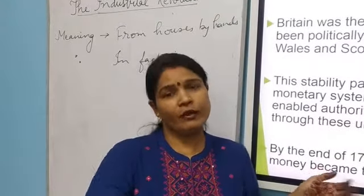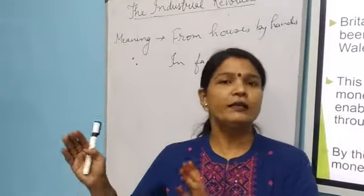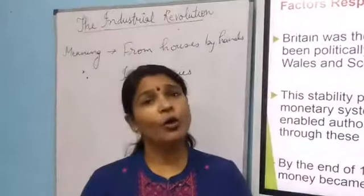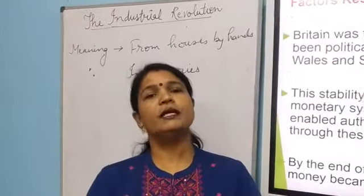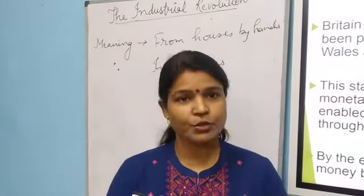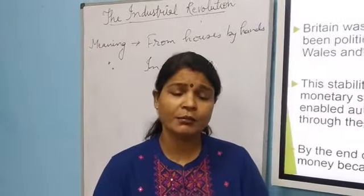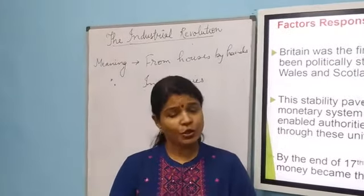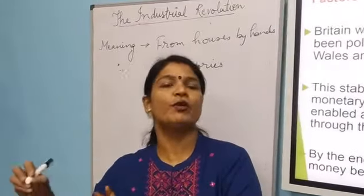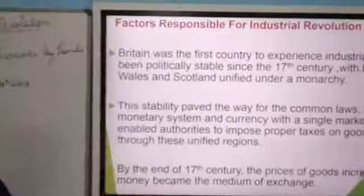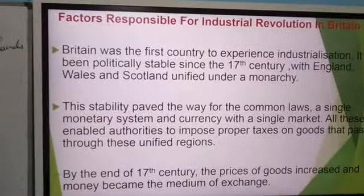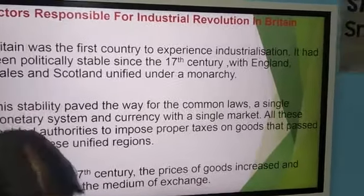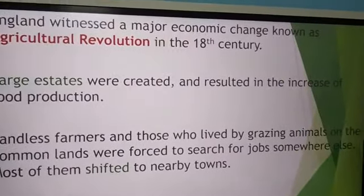Because if you are working under one ruler, you are going to follow the same rules and regulations — same laws. There was uniformity of laws, uniformity in the economic system, and uniformity in the political system as well. This all paved the way for the Industrial Revolution. Also, money became the medium of exchange, which was another key development.